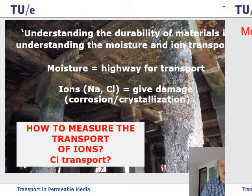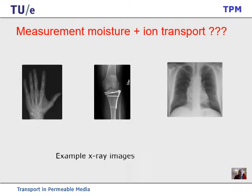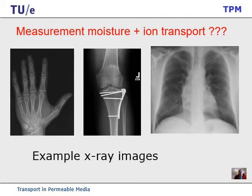Let's have a short video. The question is, how do we measure moisture and ion transport? What most people think about is something like an X-ray measurement or a CT measurement. But what you see is really the bones, the hard material — not the ions, which we would like to see. So this measurement doesn't function. We need another method.